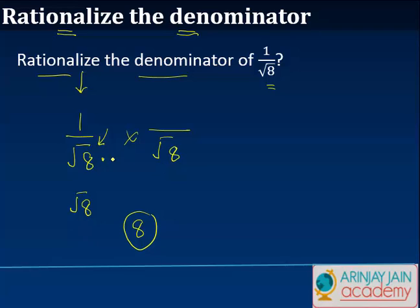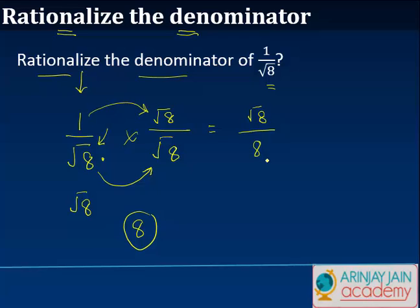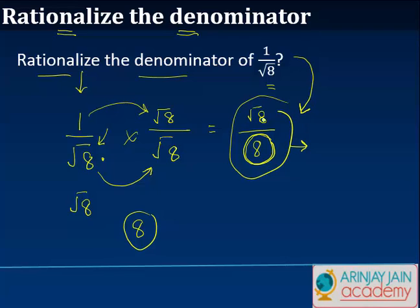But the fact of the matter is, if I'm multiplying the denominator by a particular number, I can't do it on a standalone basis. What I can do is also multiply the numerator by the same number. So I multiply both the numerator and the denominator by root 8, which gives me root 8 times root 8 equals 8 in the denominator, and root 8 times 1 equals root 8 in the numerator. So the denominator now has no root, and it stands rationalized.